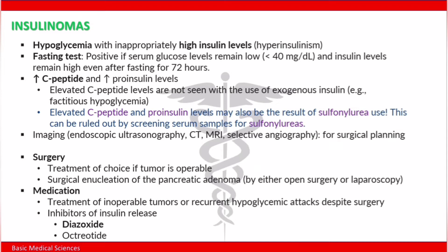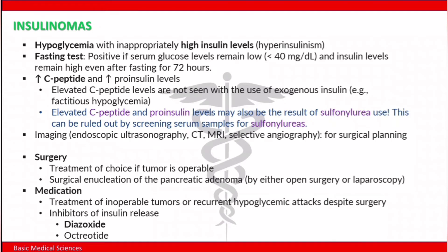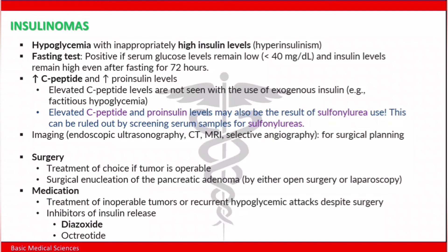C-peptide is released at the same time as insulin, so in insulinoma it will be elevated. This elevation is not seen with exogenous insulin — if the patient injects insulin, the c-peptide will be low. Elevated c-peptide and pro-insulin levels may also result from sulfonylurea use, since sulfonylureas stimulate the release of insulin together with c-peptide and pro-insulin. This can be ruled out by screening serum samples for sulfonylurea use.